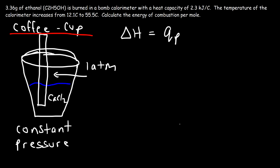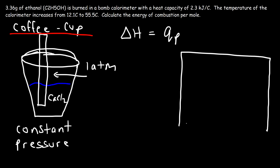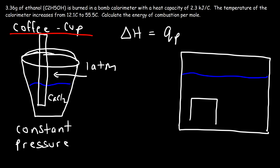So if you want to calculate enthalpy, use the coffee cup calorimeter, since the enthalpy change equals the heat absorbed or released at constant pressure. In a bomb calorimeter, energy is measured at constant volume, so it is not used to calculate enthalpy — that's why this question asks for the energy of combustion, not the enthalpy. In a bomb calorimeter, you still have water, but there is a separate rigid combustion chamber whose volume is held constant. Ignition wires extend from the combustion chamber to the outside of the bomb calorimeter to ignite the sample.